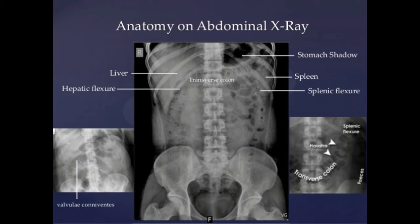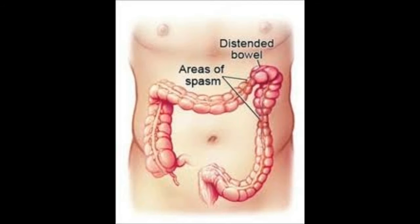The splenic flexure is a sharp bend between the transverse colon and the descending colon in the human abdomen. This bend is simply part of the normal structure of the colon. Problems sometimes arise with this area that are often diagnosed as splenic flexure syndrome. This section of colon can also become distended due to other underlying health issues.